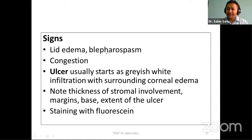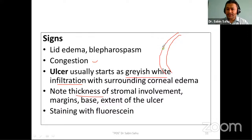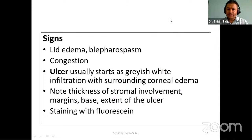On examination, we can see lid edema, blepharospasm, inability to open eyes, and congestion or chemosis. The ulcer usually starts as a grayish-white infiltration with surrounding corneal edema. We should note the thickness of stromal involvement, its margin, base, and extent. You should document how much stromal thickness is involved — whether 25%, 50%, more than 50%, or full thickness. You should make one anterior view and one slit view so that stromal involvement is distinctly visible.